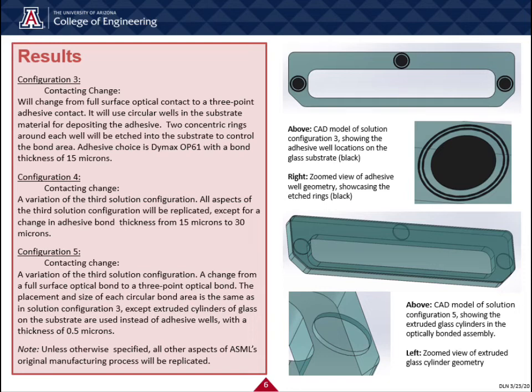Our fifth solution configuration is also a variation of the third solution configuration. The purpose of it is to understand the effect of changing from a full surface optical bond to a three-point optical bond. It is similar to the third configuration in that the placement and size of each circular bond area is the same. However, instead of wells cut inside the substrate for adhesive, they are extruded cylinders of glass, polished flat to the same smoothness quality necessary. We propose that these extrusions should be at least half a millimeter thick for easier fabrication, but the fabrication details needed to accomplish this were not derived in time for the end of the project. The concept was still developed for the sake of being a viable option to explore in the future.